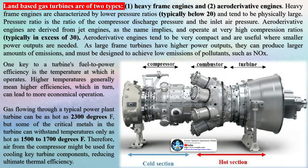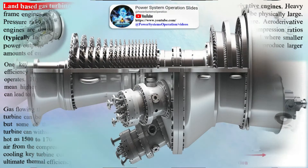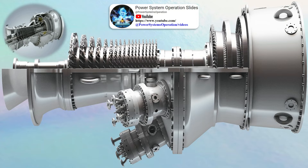One key to a turbine's fuel-to-power efficiency is the temperature at which it operates. Higher temperatures generally mean higher efficiencies, which in turn can lead to more economical operation. Gas flowing through a typical power plant turbine can be as hot as 2300 degrees Fahrenheit, but some critical metals in the turbine can withstand temperatures only as hot as 1500 to 1700 degrees Fahrenheit. Therefore, air from the compressor might be used for cooling key turbine components, reducing ultimate thermal efficiency.